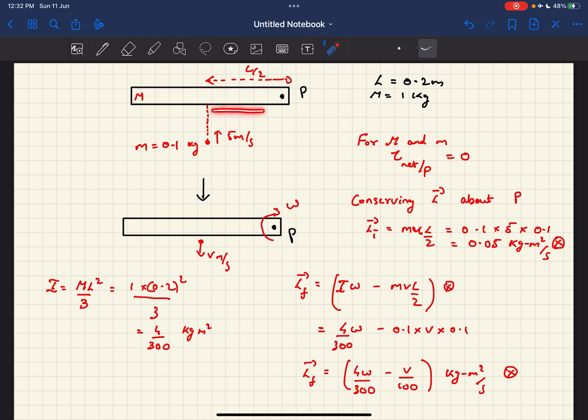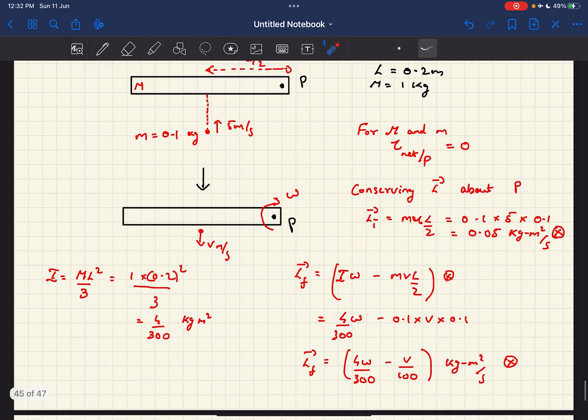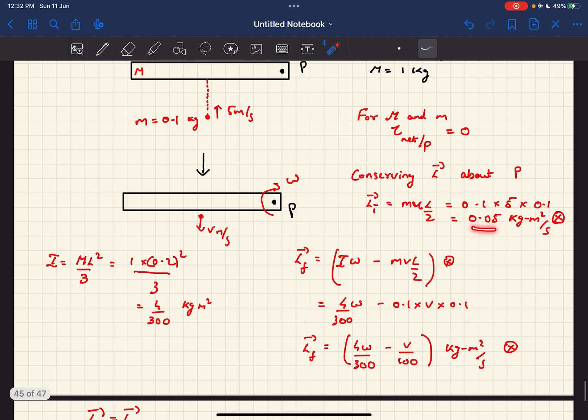And the l by 2 is just the perpendicular distance of the smaller mass from the hinge. So that would be the initial angular momentum, and if you calculate it will come out to be 0.05.